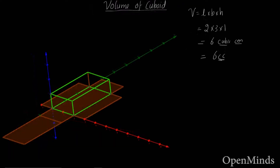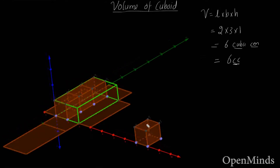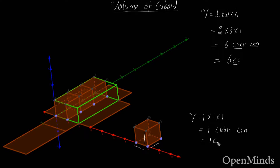The best way to visualize volume is to put small cubes inside this box. Each cube has dimensions of one centimeter by one centimeter by one centimeter, so its volume is one into one into one, which is one cubic centimeter, or one cc. That amount of space is called one cc.